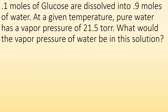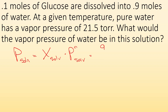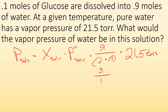Example problem: 0.1 moles of glucose are dissolved into 0.9 moles of water. At a given temperature, pure water has a vapor pressure of 21.5 torr. What would the vapor pressure of water be in this solution? P_solution = X_solvent × P°_solvent. The mole fraction is 0.9 divided by total moles — glucose is a non-electrolyte so it's 0.1 + 0.9 = 1.0 — times 21.5 torr. So we get 0.9 divided by 1.0, times 21.5, and we end up with 19.35 torr.